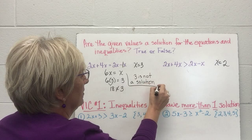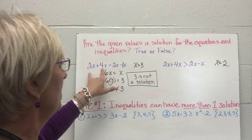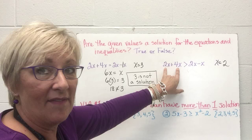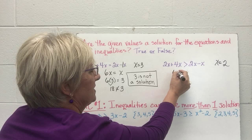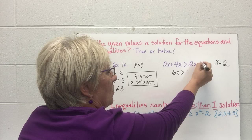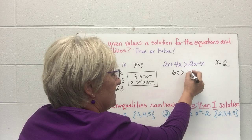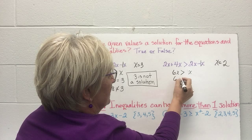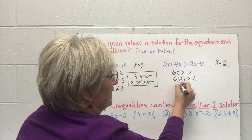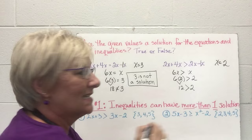Now for the inequality 2x plus 4x is greater than 2x minus x, with x equals 2. I combine like terms: 2x plus 4x is 6x, and 2x minus 1x is x — remember, if there's no coefficient in front of a variable, it's assumed to be 1. Plugging in 2: 6 times 2 should be greater than 2. I know 6 times 2 is 12. Is 12 greater than 2? Yes, it is. So 2 is a solution.